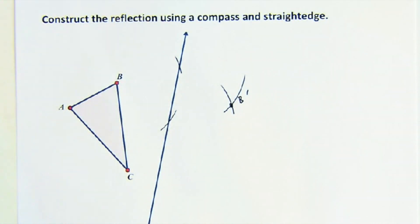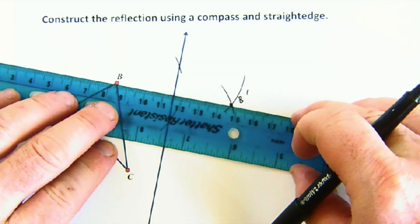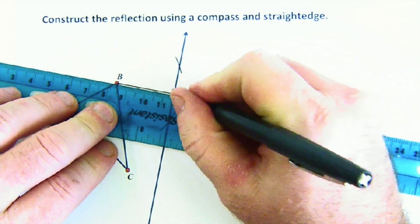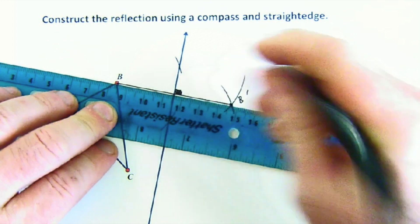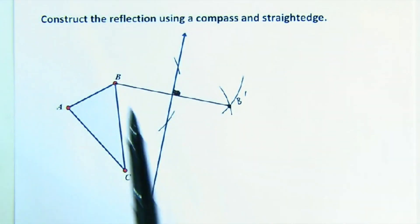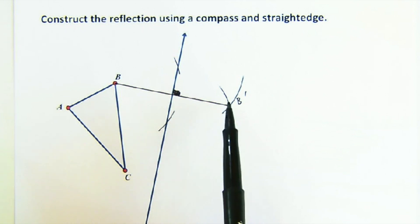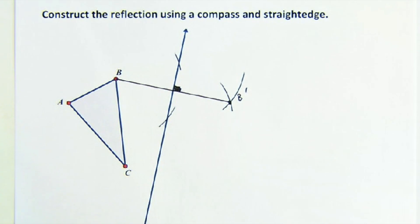Now, B prime is the location of the reflection, and the reason why is we did two things. We created a perpendicular line. That was the construction we just did. And by keeping our compass the same length, we guarantee that this location is the same distance from these two points as to this one. A perfect reflection.